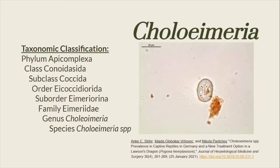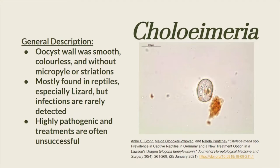Here is the taxonomic classification of the genus Colomera. The oocyst wall is smooth, colorless, and without micropyle or striations. It is mostly found in reptiles, especially lizards, but infections are rarely detected. It is highly pathogenic and treatments are often unsuccessful.